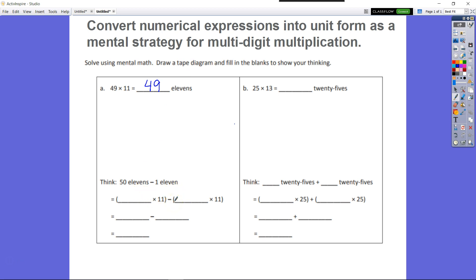So let's see, we know that we're trying to get to 49 elevenths. We know that 49 elevenths is equal to 50 elevenths minus 1 eleven. So let's write it in: 50 times 11 minus 1 times 11.